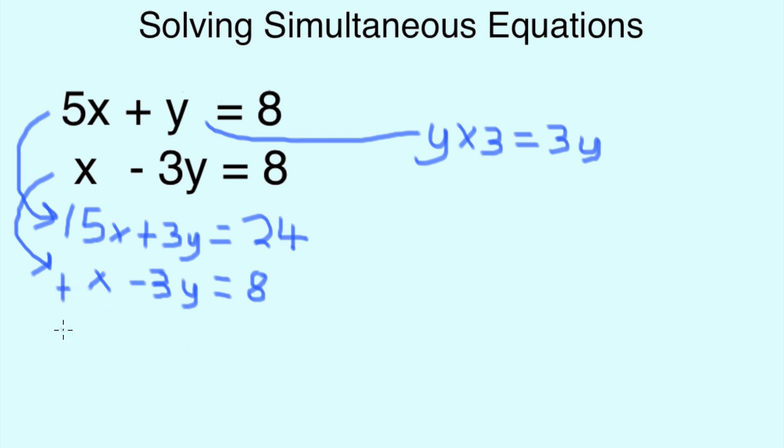So, what we're left with is 16x, and because we've taken the minus 3 from the plus 3, that results in nothing, so we ignore that middle phrase, and what's left at the end is 32. So, if we take our 32 and we divide that by 16, we get 2. Therefore, x must equal 2.